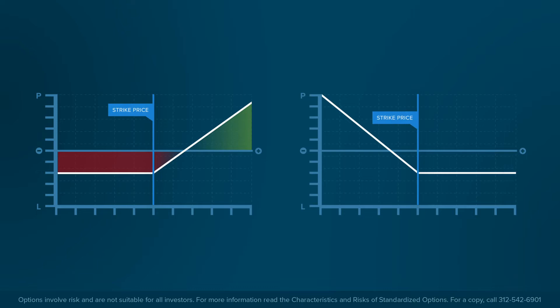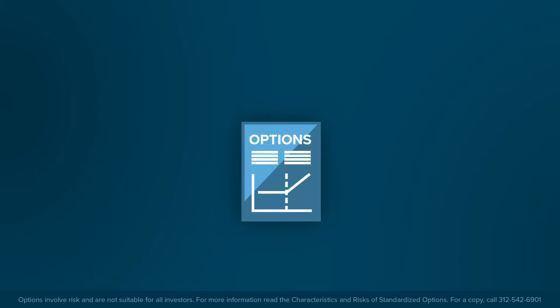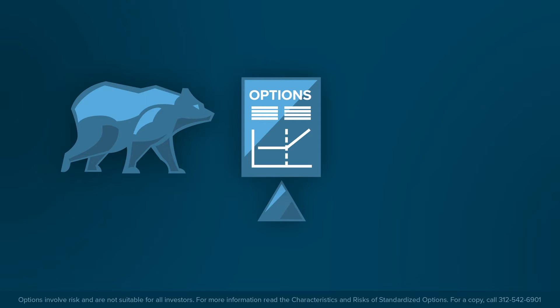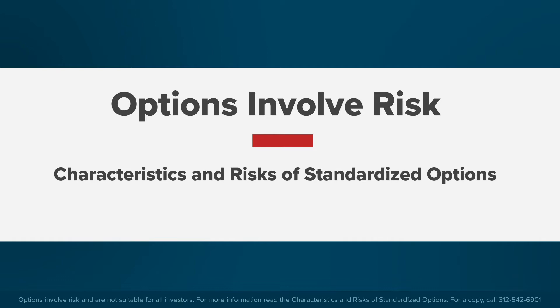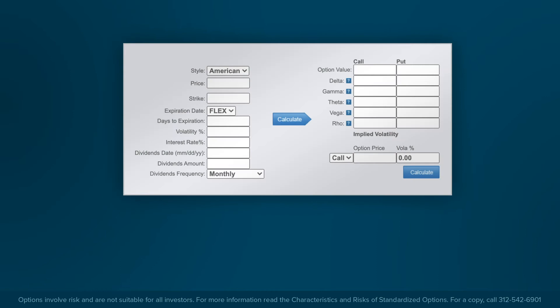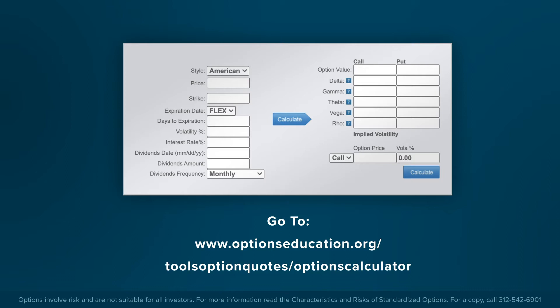As discussed in prior lessons, options trading provides additional leverage to trading equities and thus carries increased risk. Options involve risk and are not suitable for all investors. For more information, read the Characteristics and Risks of Standardized Options. An option buyer can lose the entire premium, and the option seller may have unlimited risk of loss. This lesson incorporates an online options calculator from the Options Industry Council — a free interactive resource available from optionseducation.org.